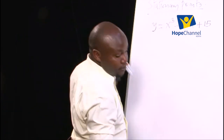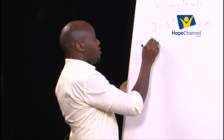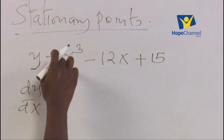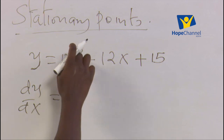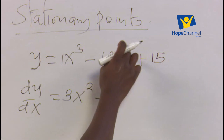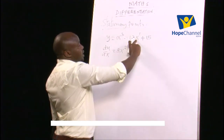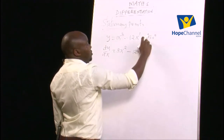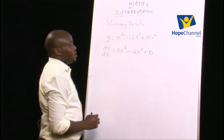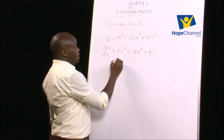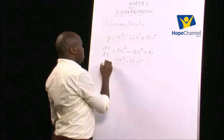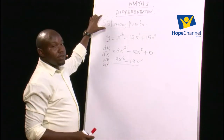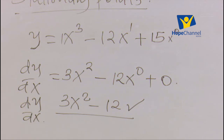Step 1: find the gradient function dy/dx. For y = x³ − 12x + 15, multiply the power by the coefficient and reduce the power by 1. So dy/dx = 3x² − 12. The constant 15 disappears because 0 × 15 = 0. Step 2: for stationary points, equate dy/dx to zero: 0 = 3x² − 12.